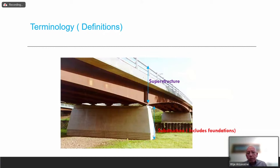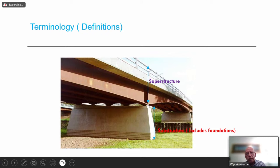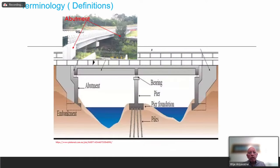The superstructure is from the top of the railing right to the bottom of the girder — where the girder sits at the bearing — so from the bearing up to the barriers. The substructure is where the bearings are located, from just underneath the bearing right down to the foundation. If there are piles, the piles also form part of the substructure. This gives a clearer picture of the components.